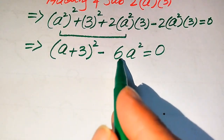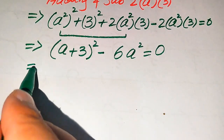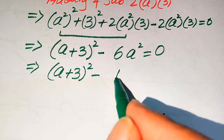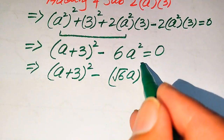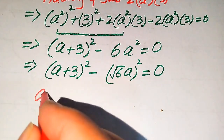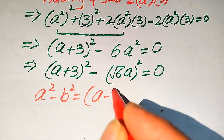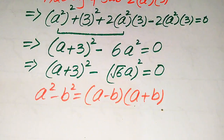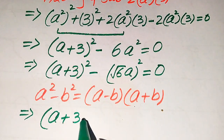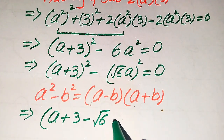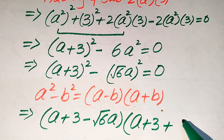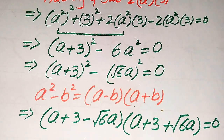In the next step we rewrite this equation in complete square form: (a²+3)² minus (√6·a)² equals 0. We use the formula a² − b² = (a−b)(a+b), so this becomes (a²+3 − √6·a)(a²+3 + √6·a) = 0.